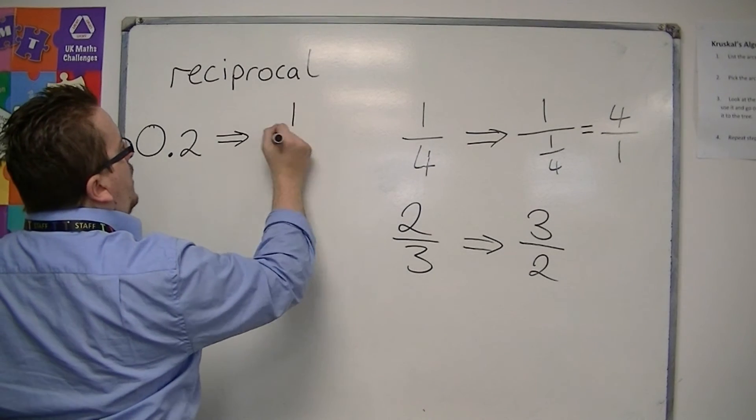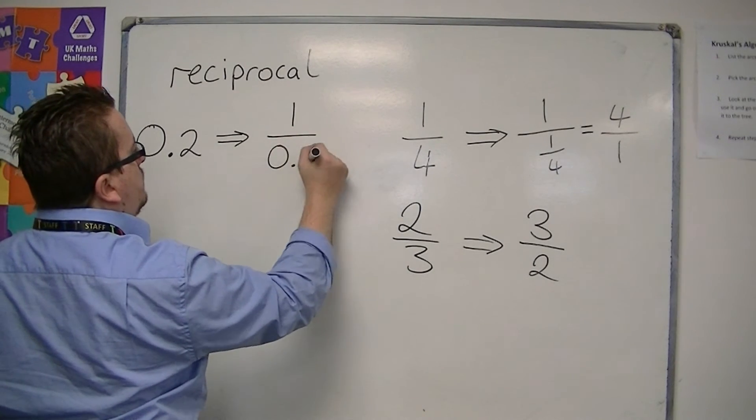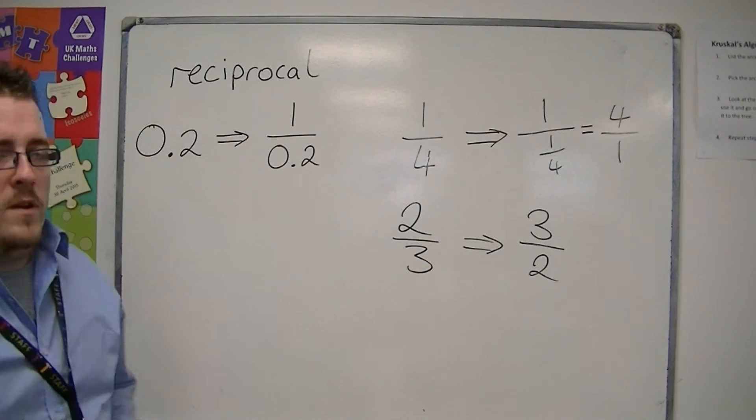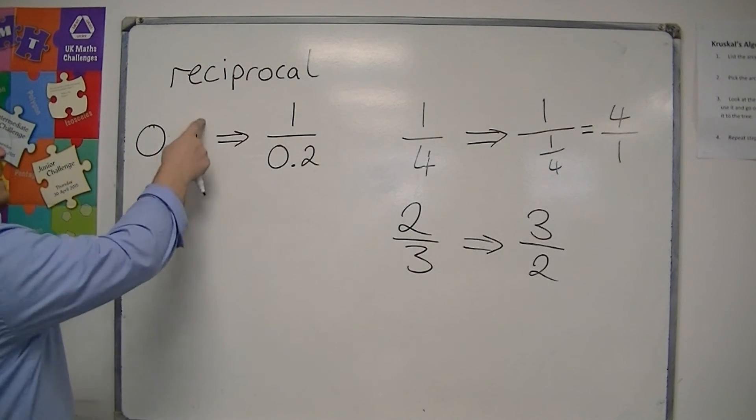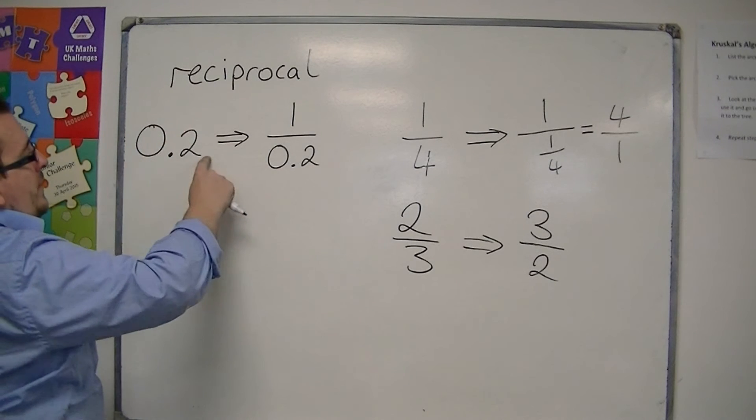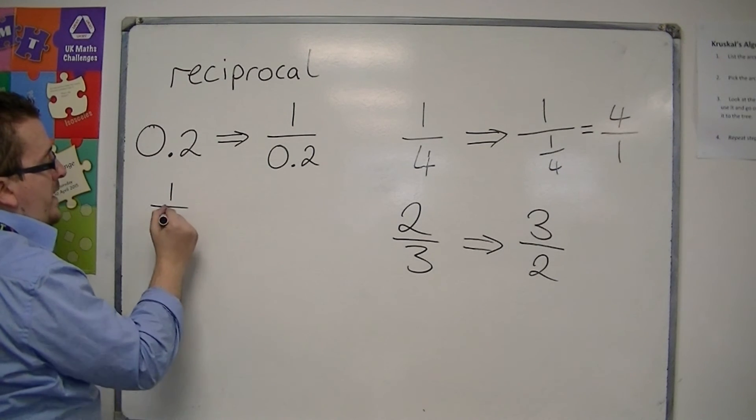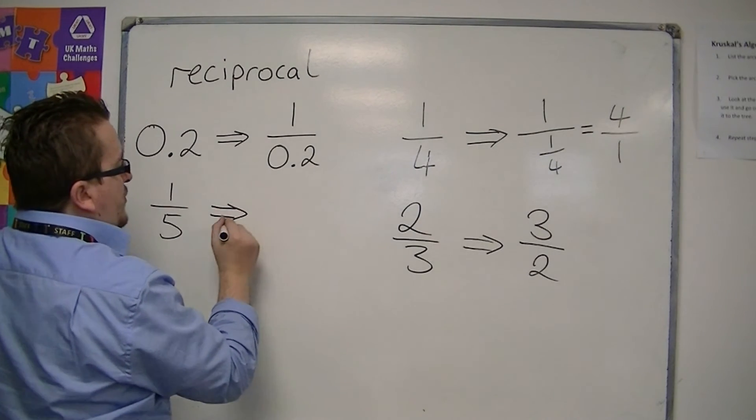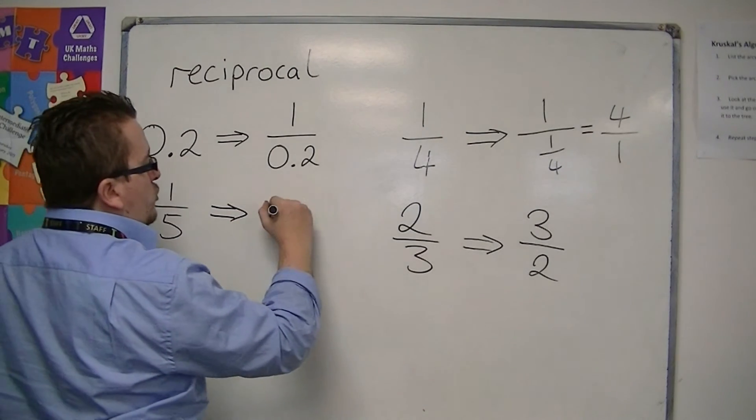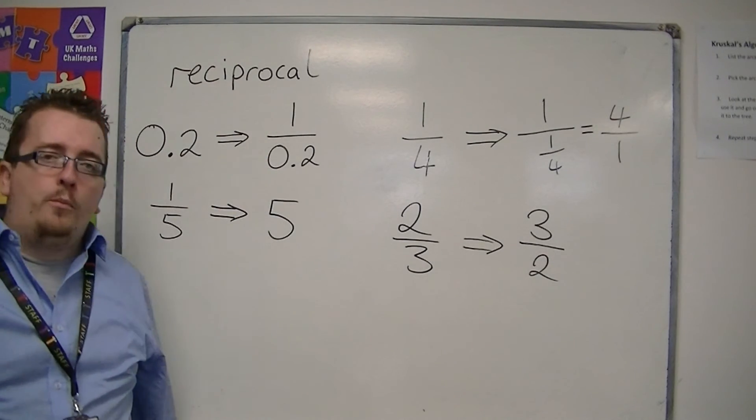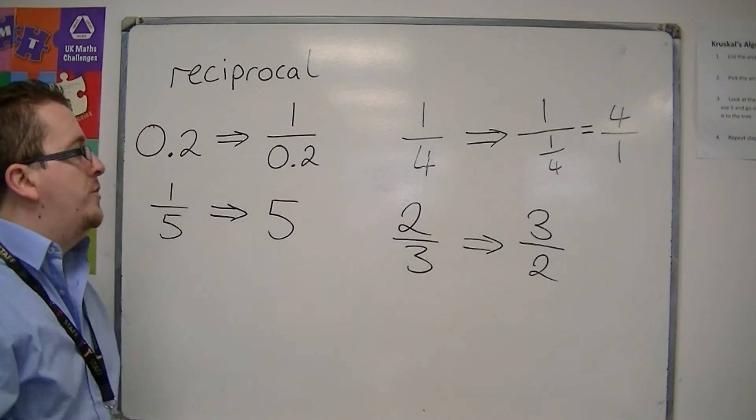Then the reciprocal of that is 1 over 0.2. Okay, well that's fair enough. But we don't want to write 1 over 0.2. What you really want to do is be able to say, well 0.2 is the same as 1 fifth as a fraction, so the reciprocal of 1 fifth is actually 5. And if you want to check, you can do 1 divided by 0.2 on your calculator, and you should get 5.